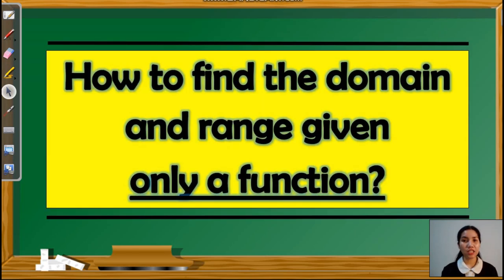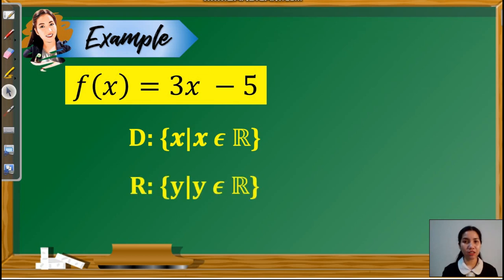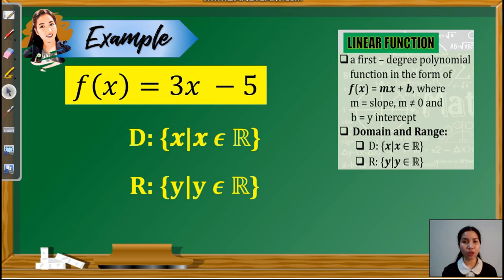In the previous examples, we looked for the domain and range based on given graphs. This time, let us learn how to find the domain and range given only a function. First, we have f(x) is equal to 3x minus 5. We can input any real number to x and find a real number y. This is a first-degree polynomial function, called a linear function, and we can visualize it as a slanting graph. Therefore, the domain and range of this function are both the set of real numbers.